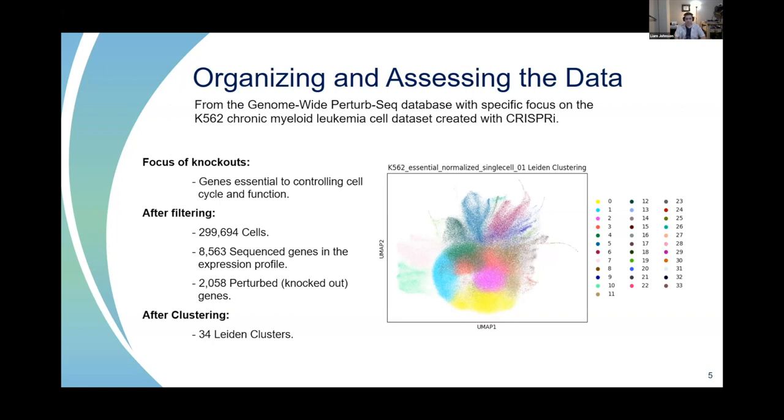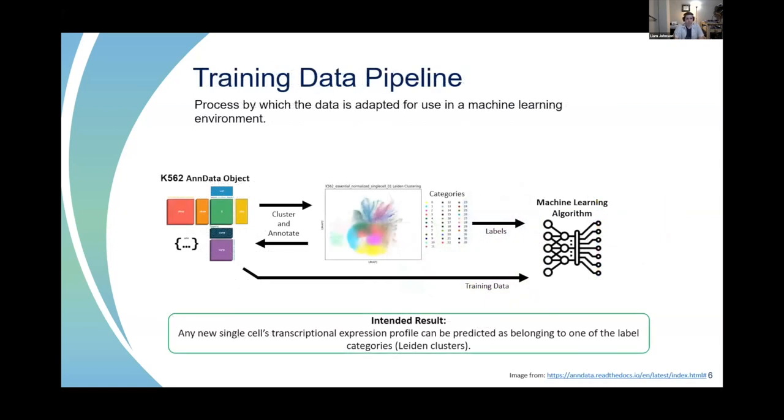I clustered it using a Leiden algorithm. Typically what you'd be looking at in the clustering is a display of different cell types, but this is different. These are all from a homologous cell line. What you're seeing in the clusters are drastically different but may be similar to each other within the cluster phenotypic responses. I did this to develop my data training pipeline because it's much easier to train a categorical machine learning algorithm on 34 categories than all 2,058 knocked out genes.